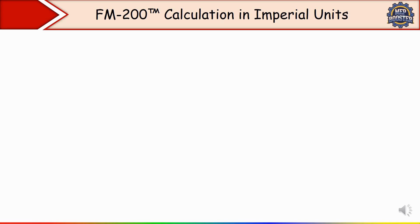The properties of FM 200 are: it is a colorless, odorless, clear gas. About the working and everything I have already discussed in the previous lecture — you can go through that video to get the idea.